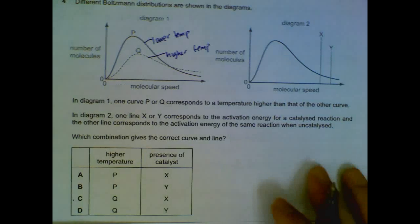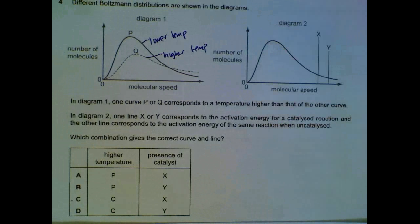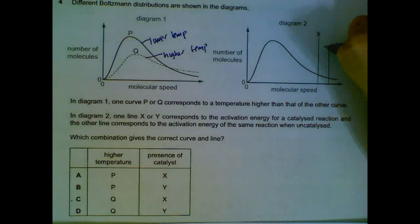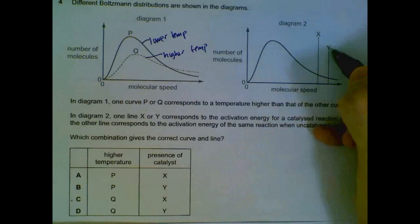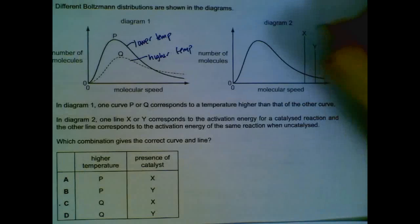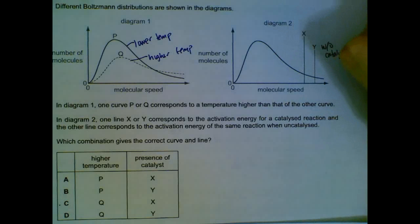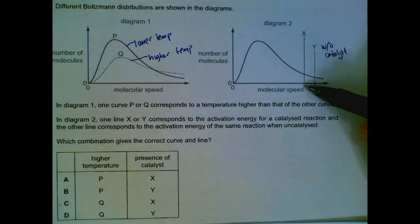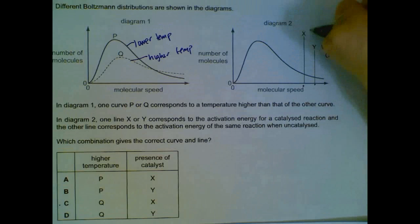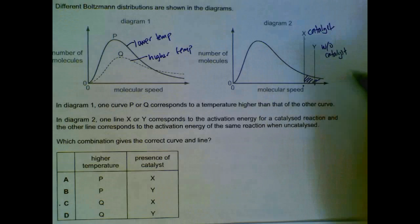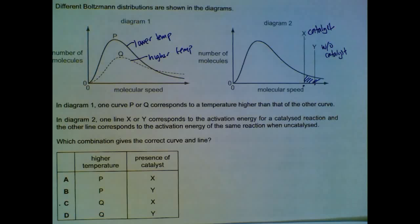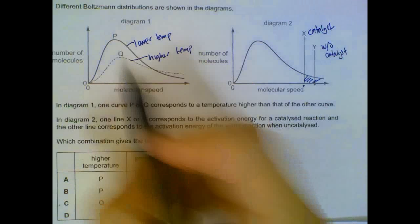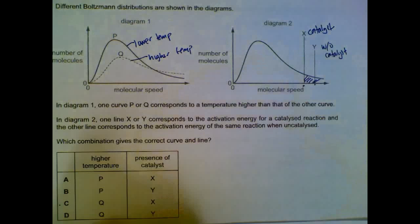In terms of the effect of a catalyst — if we have a catalyst, it will lower the activation energy. So Y is the curve without a catalyst. If there is a catalyst, the activation energy will be at a lower value, so X is the curve with a catalyst. That means more particles will exceed the required activation energy when a catalyst is present. So the higher temperature curve is Q, and the catalyzed reaction is X.